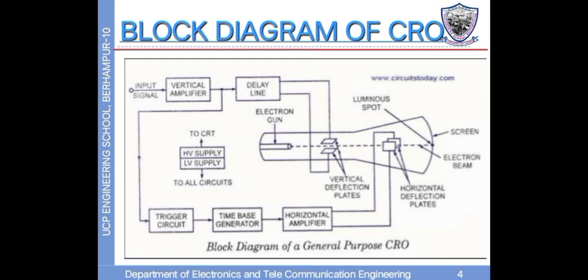The third block is the trigger circuit. This circuit generates a triggered pulse which keeps synchronization between the input signal and the horizontal deflection circuit. The fourth block is the time-based generator. It generates a sawtooth waveform and applies it to the horizontal deflection plate. As the sawtooth wave varies linearly with time, the movement of the electron beam varies at constant velocity. The last block is the horizontal amplifier. Before applying it to the horizontal deflection plate, the signal is amplified using the horizontal amplifier.